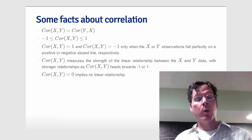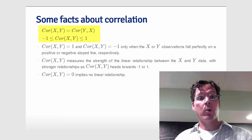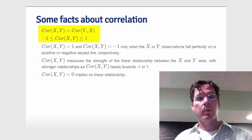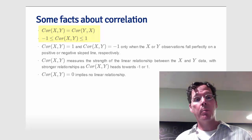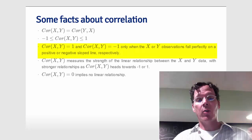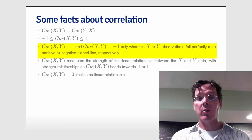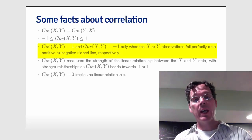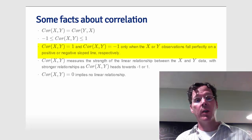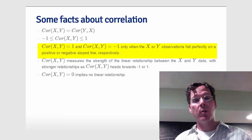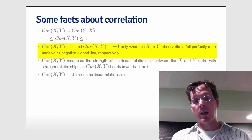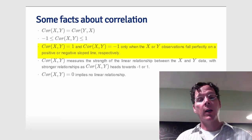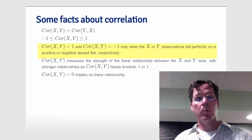And we'll end our whirlwind tour of notation with some basic facts about correlation. So the correlation has to be between minus 1 and plus 1, and it's only going to achieve these bounds, minus 1 or plus 1, when the X and Y observations fall perfectly on a positively or negatively sloped line, respectively. In other words, a positive line for a correlation of 1 and a negative line for a correlation of minus 1.